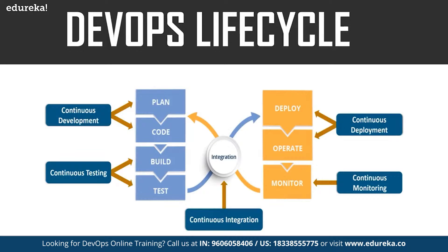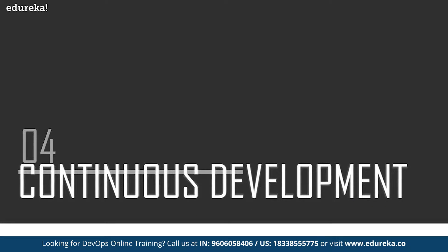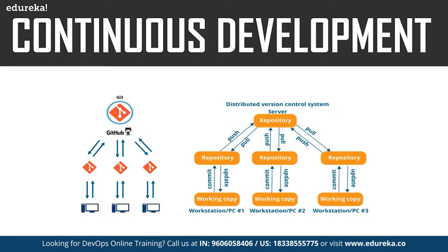The first phase of the DevOps lifecycle is continuous development. This phase involves planning and coding of the software application's functionality. There are no specific tools for planning, but there are a number of tools for maintaining the code. The vision of the project is decided during planning, then actual coding begins. The code can be written in any language but is maintained using version control tools. The most popular tools used are Git, SVN, Mercurial, CVS, and Jira. Tools such as Ant, Maven, and Gradle can be used for building or packaging the code into an executable file to be forwarded to the next phases. Tools like Git enable communication between the development and operations team, which was a drawback of the agile model.